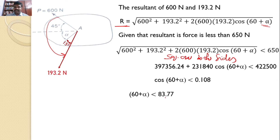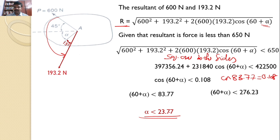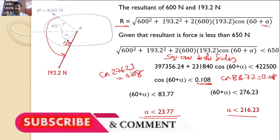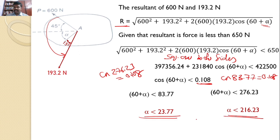Since cos(83.77°) = 0.108, we get 60 + α < 83.77, so α < 23.77 degrees. There is another possibility: cos(276.23°) also equals 0.108, giving 60 + α < 276.23, so α < 216.23 degrees. Hence, the range of angle is α less than 23.77 degrees and α less than 216.23 degrees.